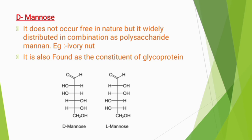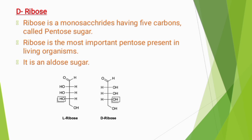D-mannose does not occur free in nature, but it is widely distributed in combinations as the polysaccharide mannan — for example, in ivory nut. It is also found as a constituent of glycoproteins. D-ribose is a monosaccharide having 5 carbon atoms, called a pentose sugar. It is the most important pentose present in living organisms and is an aldose sugar. Here we can see the structures of L-ribose and D-ribose.